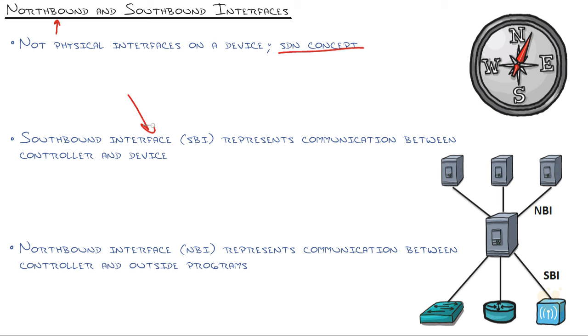Like take that word off of there because it's a logical SDN concept. It's not actually physical interfaces on a device. The southbound interface represents all of the communication between the controller, here's our SDN controller, and the network devices. So this essentially represents an API.